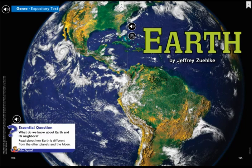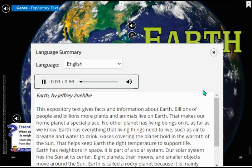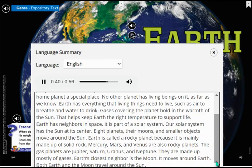Let's take a listen to the summaries first in English, then in Spanish to see if you're right. Earth by Jeffrey Zolke. This expository text gives facts and information about Earth. Billions of people and billions more plants and animals live on Earth. That makes our home planet a special place. No other planet has living beings on it, as far as we know. Earth has everything that living things need to live, such as air to breathe and water to drink.